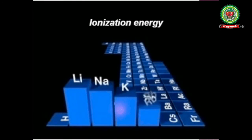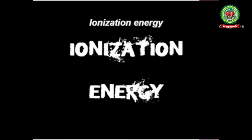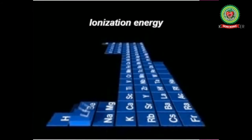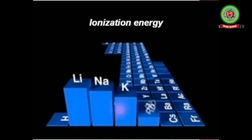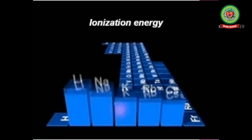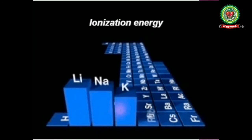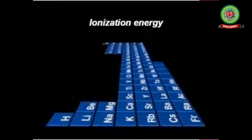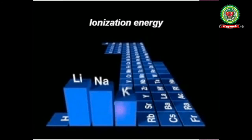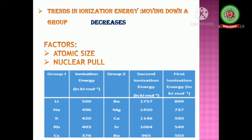Why is this so? It depends upon two factors: atomic size and nuclear pull. As we move down a group, atomic size increases but nuclear pull decreases, so it is easy to lose an electron. Hence a lesser amount of energy is required. Here is an example of the first group — as we move down a group, ionization energy in kilojoule per mole decreases.